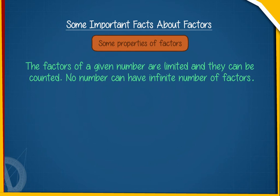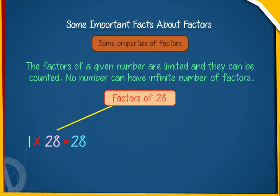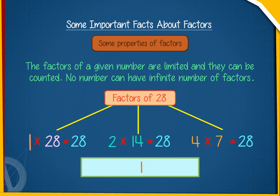Let us find the factors of 28. For this, we will first write it as a product of two numbers. Thus, the factors of 28 are 1, 2, 4, 7, 14, and 28.